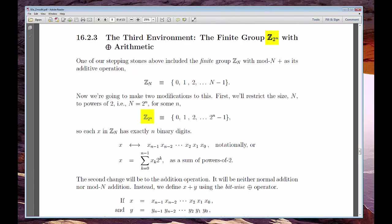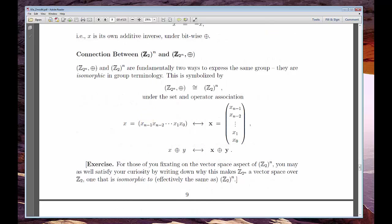This environment is called Z subscript 2 to the N. You have to watch those parentheses to distinguish it from the vector space Z sub 2 all to the N.